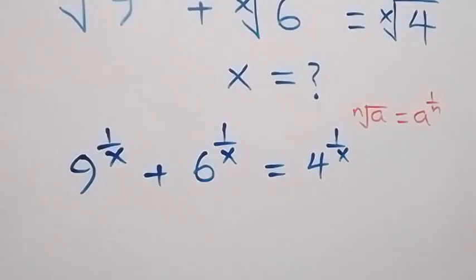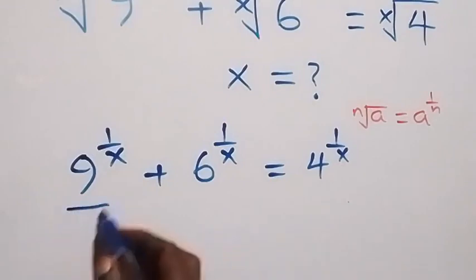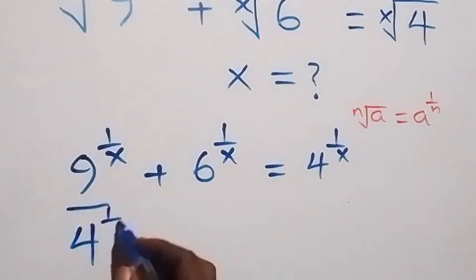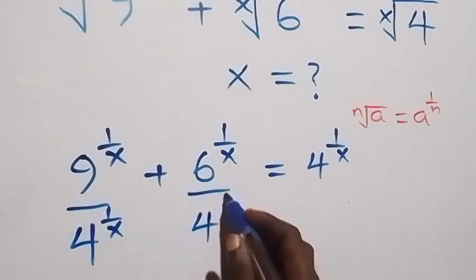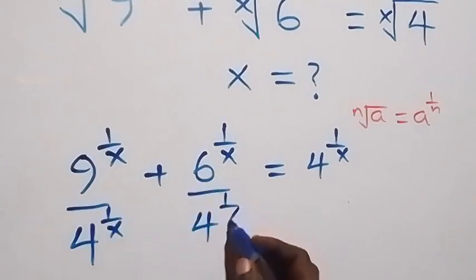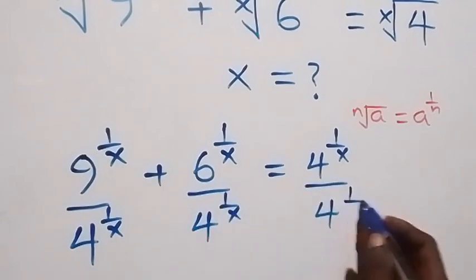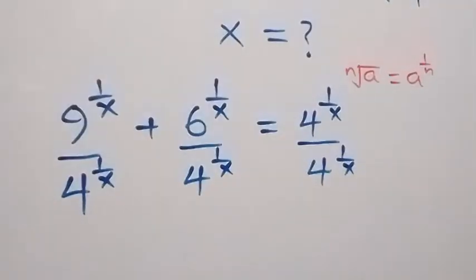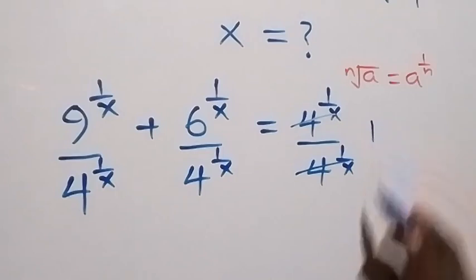Next step: let's divide through by 4 raised to power 1 over x. We divide this side by 4 raised to power 1 over x, also here by 4 raised to power 1 over x, and also here by 4 raised to power 1 over x. That is, the right-hand side cancels out and everything becomes 1.